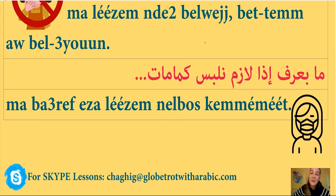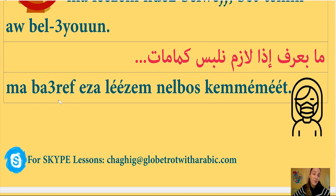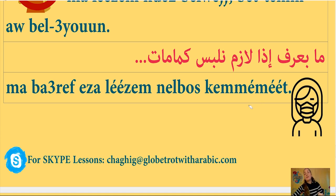Sixth precaution — سادس احتياط. ما بعرف إذا لازم نلبس كمامات. ما بعرف means 'I don't know' (بعرف = I know). إذا means 'if.' لازم نلبس means 'we should wear.' كمامة is one face mask, كمامات is face masks (plural) — the medical face mask, not a Halloween costume. So: I don't know if we should wear face masks.